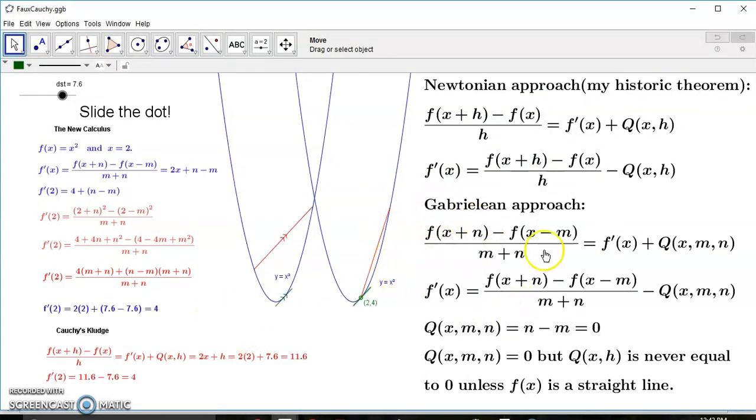Now the Gabrielian derivative approach is based on this formula. This part here is the slope of a parallel secant line, this red line here, and this is the slope of the derivative plus the difference.